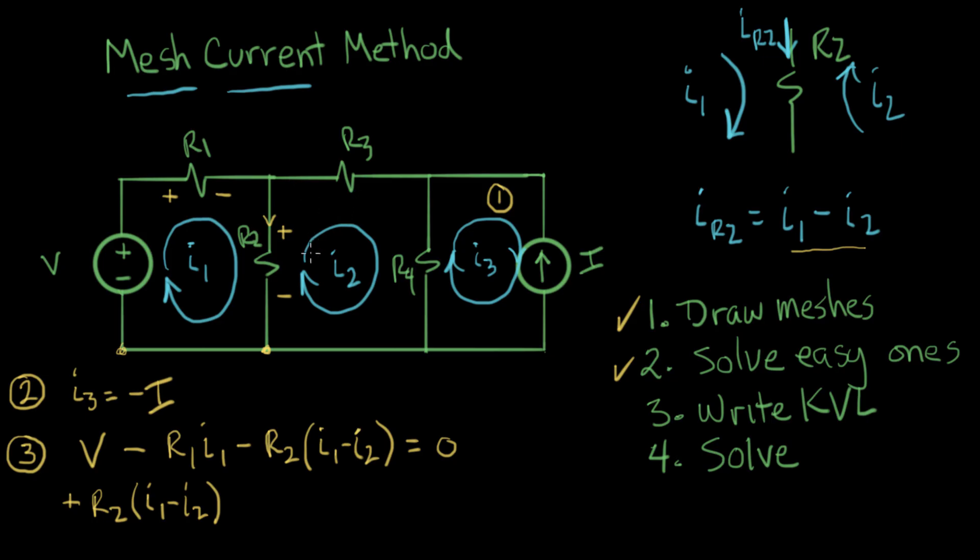Now we go through R3. R3 just has one mesh current, it just has I2 flowing through it. So that counts as a voltage drop, it gets a minus sign, and its value is R3 times I2.